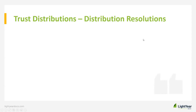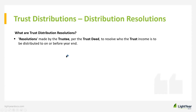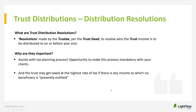Trust distribution resolutions are resolutions made by the trustee — not the beneficiaries or any other party — per the trust deed, to resolve who the trust income is to be distributed to on or before year end. They assist with the tax planning process and are an opportunity to make the process mandatory with clients. If a valid resolution is not put in place and beneficiaries are not presently entitled to income, the trust may end up being taxed at the highest rate of tax — we do not want that to happen.